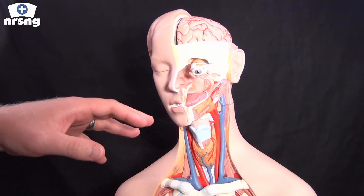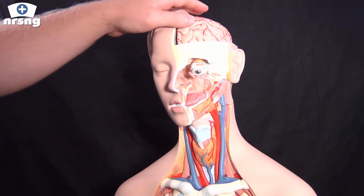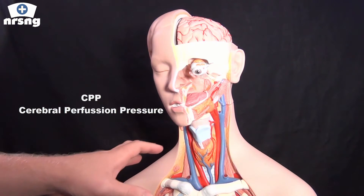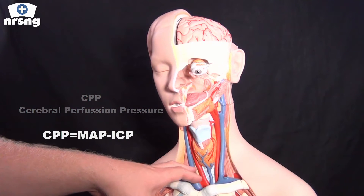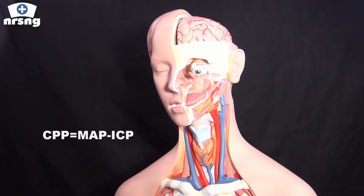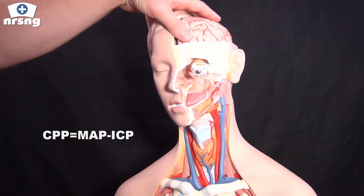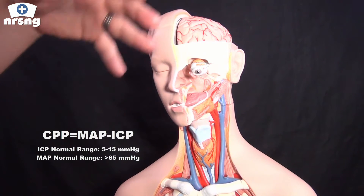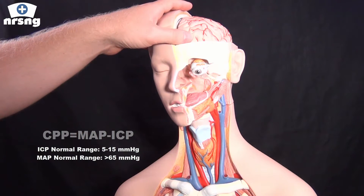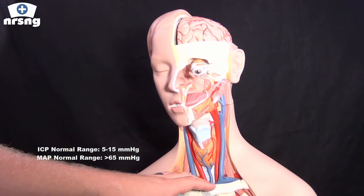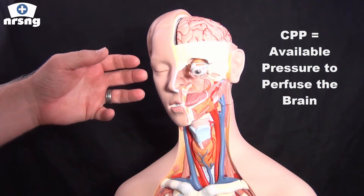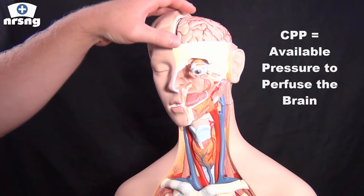Let's talk about what CPP is and why this number is so important. CPP stands for Cerebral Perfusion Pressure. It is MAP — our mean arterial pressure, basically the average blood pressure within the system — minus ICP. ICP is intracranial pressure, which normally should be 5 to 15 millimeters of mercury. Our MAP we want to maintain above 65 or so. What CPP tells us is essentially how much pressure is available to perfuse the brain.